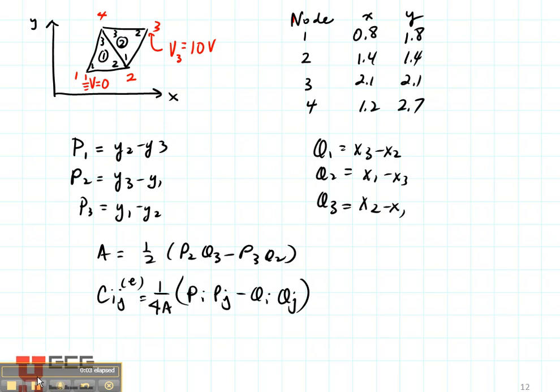So in our previous example, we talked about a set of nodes and how to compute the A and the Cij, the global coefficient matrices.